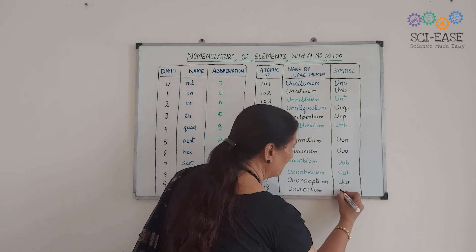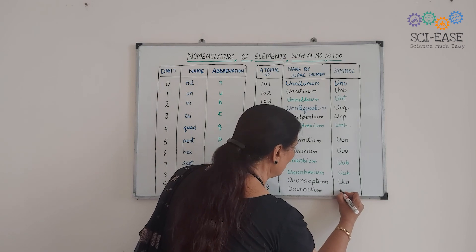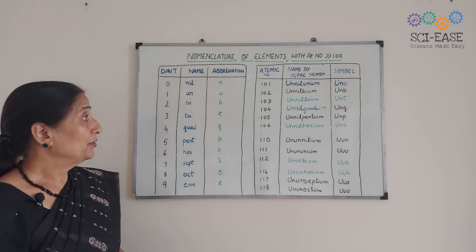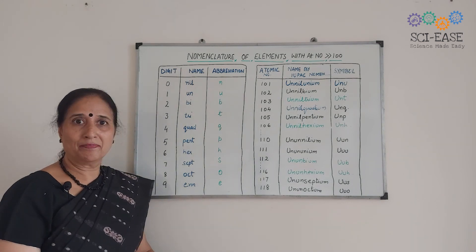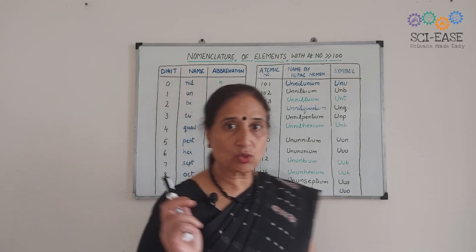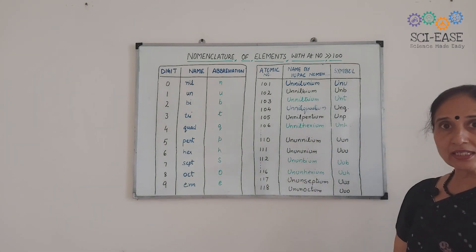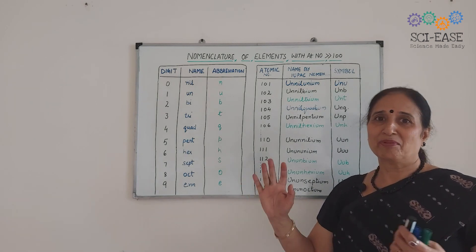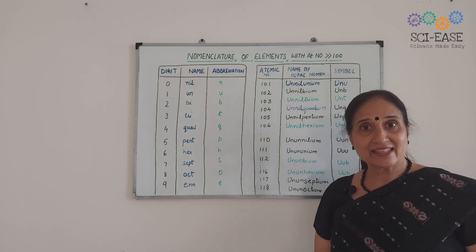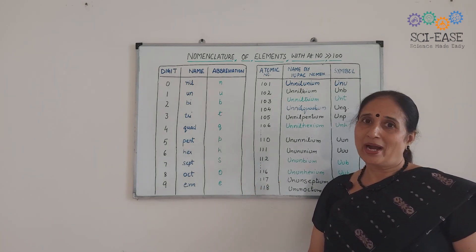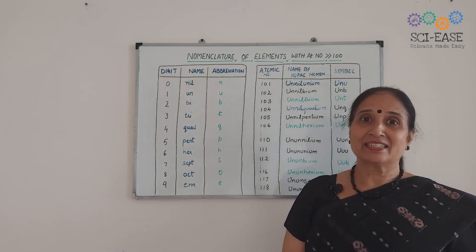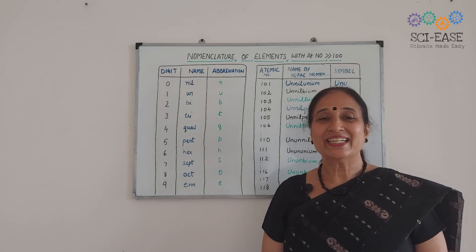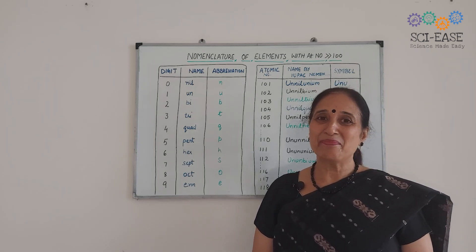You will write the names and symbols for 119 and 120 on your own for practice. I think you will have no problem with this question whenever it is asked — you will immediately write the name and symbol. I'll come with another topic of class 11 in the next video. Till then, thank you very much.